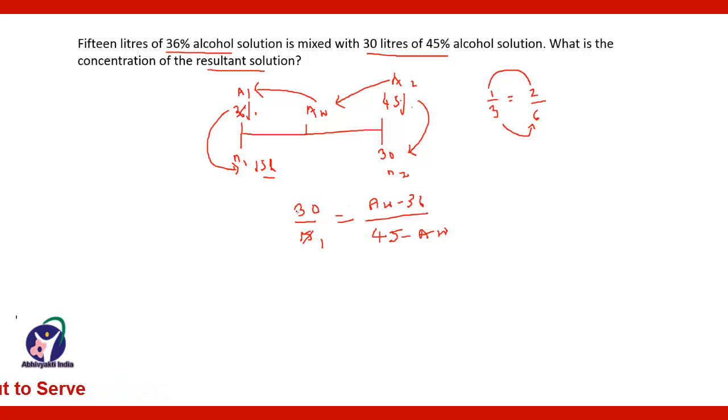15 ones are 15, 15 twos are 30. Now cross multiply, so it will be 90 minus twice of AW, which equals AW minus 36. Collect the terms containing AW to one side and all constants to the other side. You will get thrice of AW equals 90 plus 36, which is 126. Therefore, AW equals 126 divided by 3, which equals 42%. The concentration of the resultant solution is 42%.